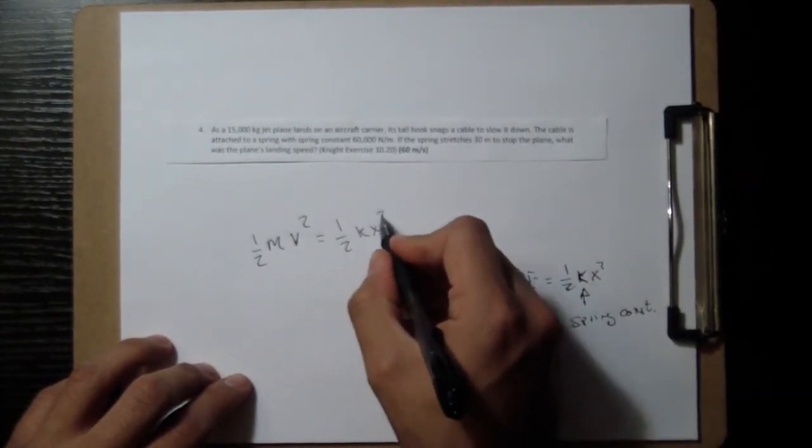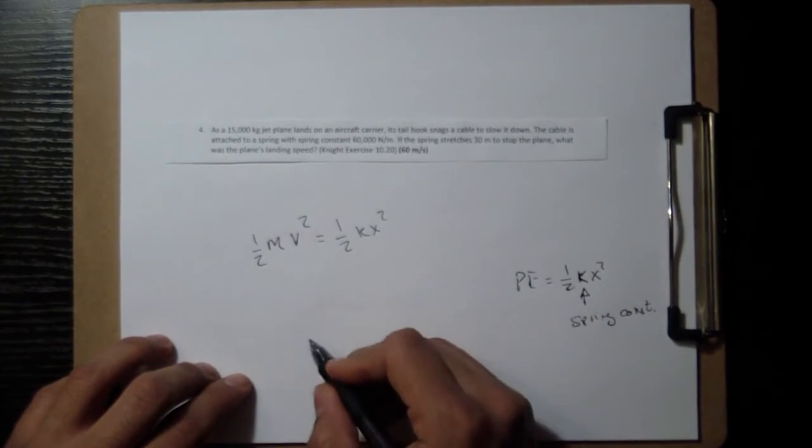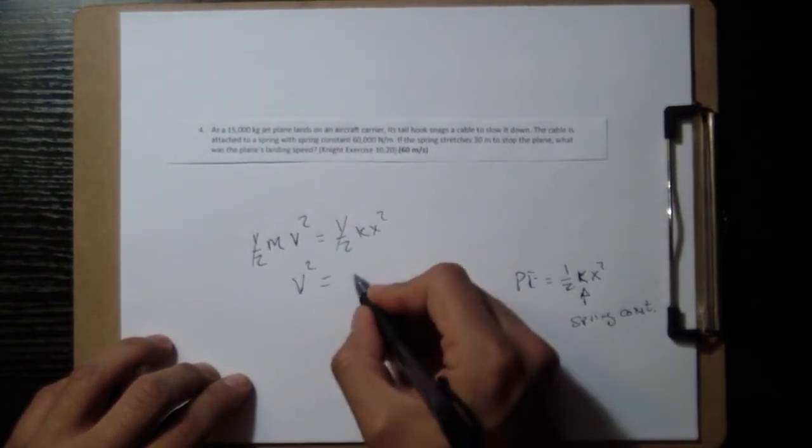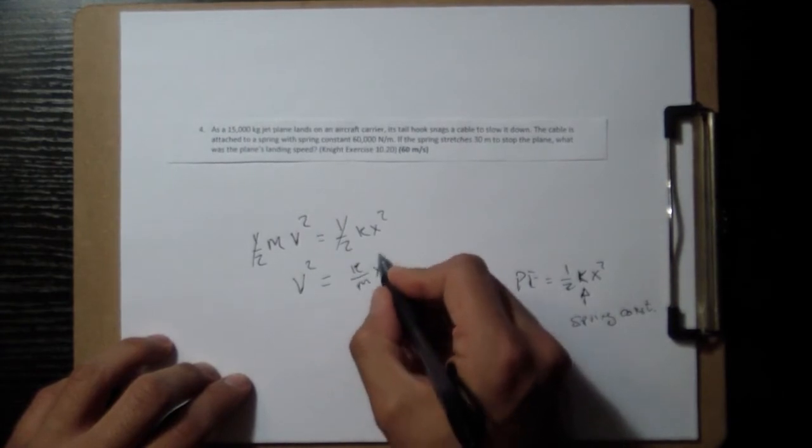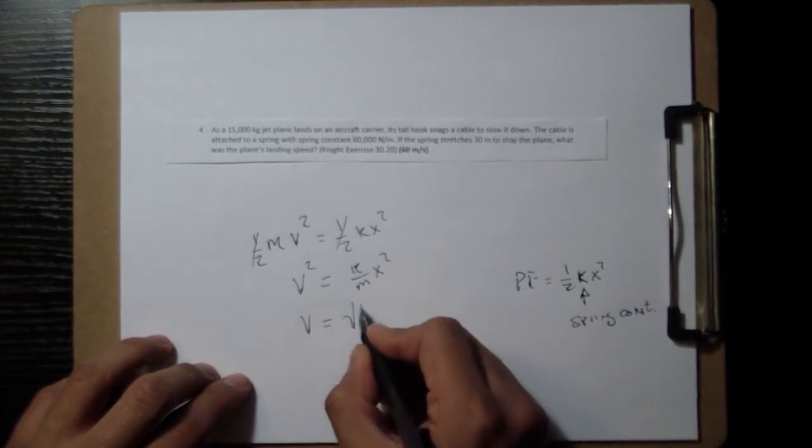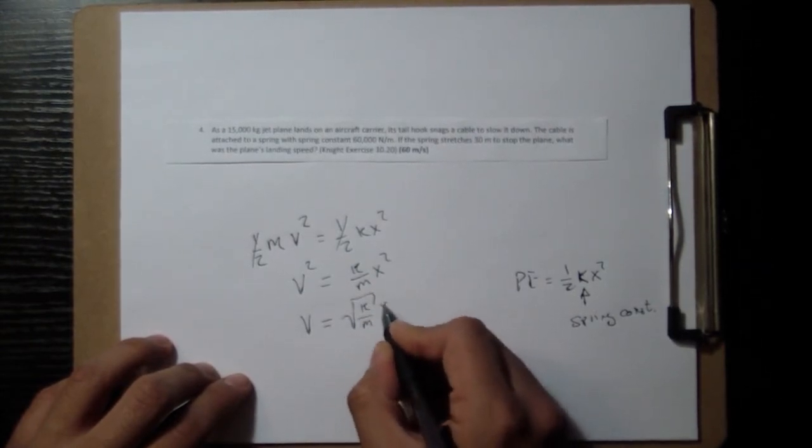Well, I'm looking for this original v, so I'll isolate that. Half cancels half. k over m times x squared. Take a square root of both sides, we're going to get square root of k over m times x.